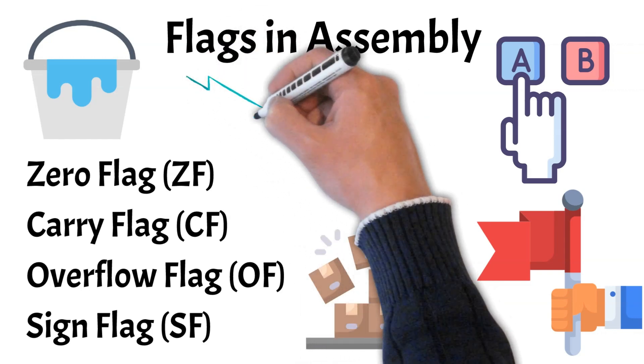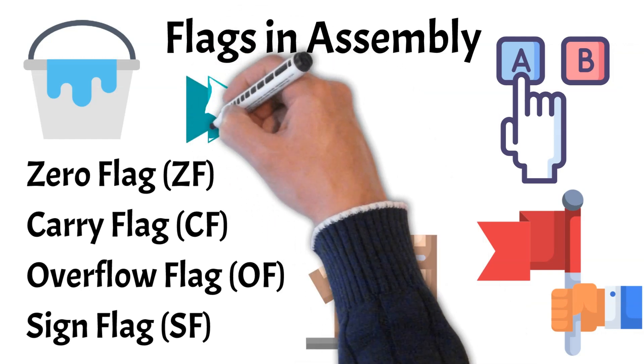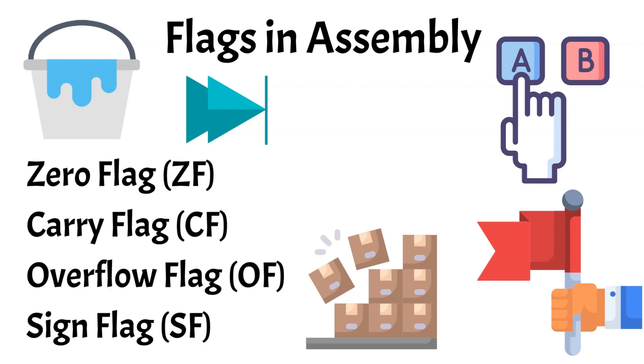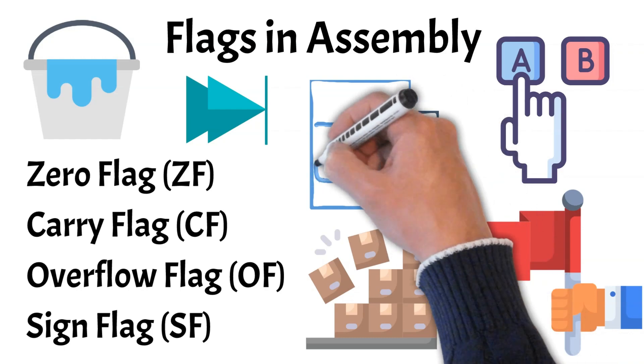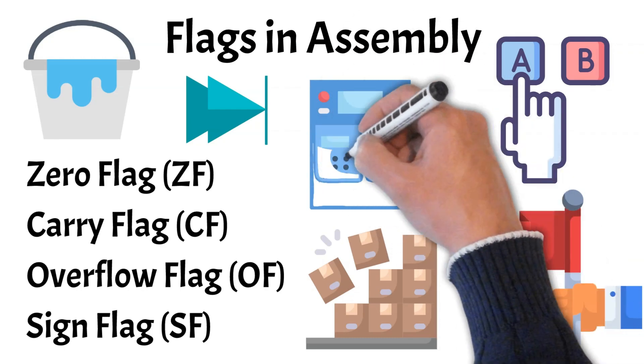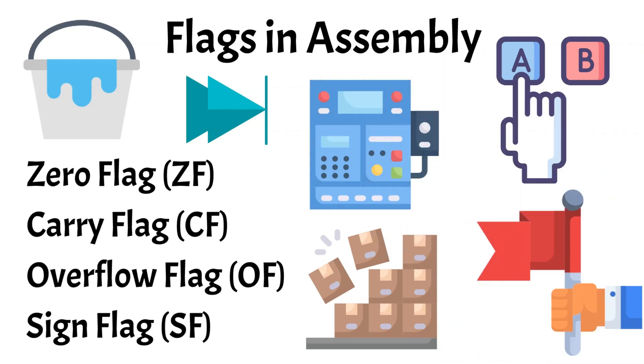Flags are especially important in conditional operations. For instance, after a comparison, a jump instruction will check the status of these flags to determine whether or not to jump to another part of the code. Understanding flags is key to controlling how the CPU processes tasks and reacts to different outcomes in assembly programming.